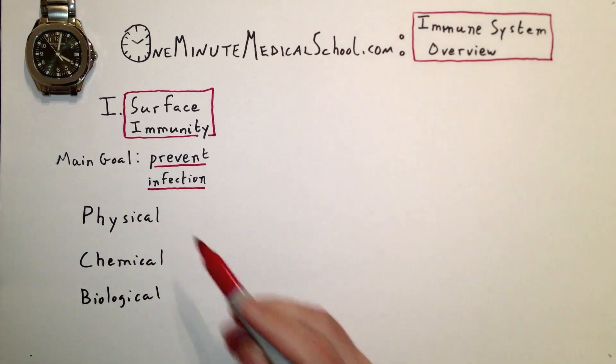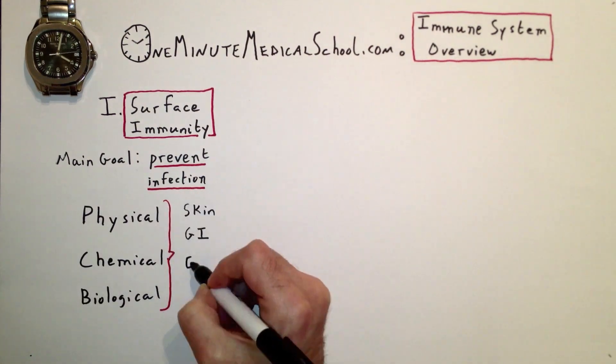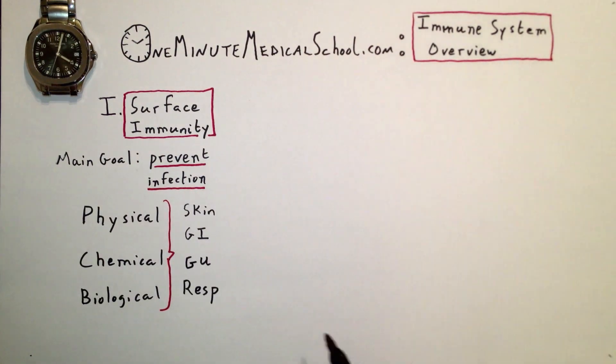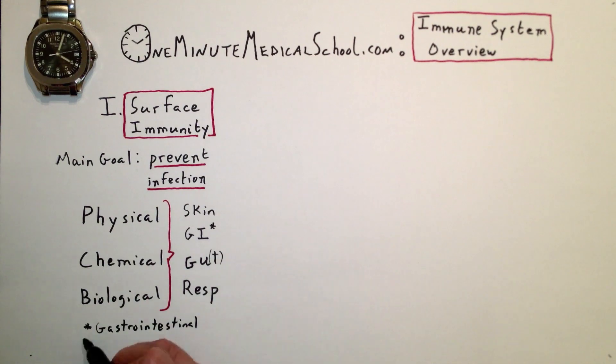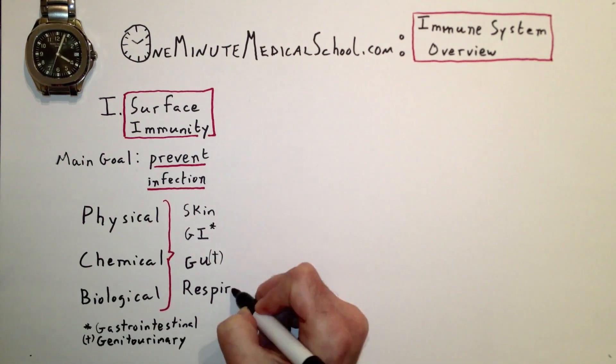It has physical, chemical, and biological aspects lining your skin, gastrointestinal, genitourinary, and respiratory tract.